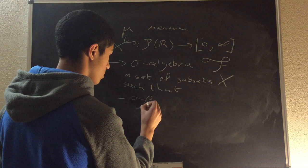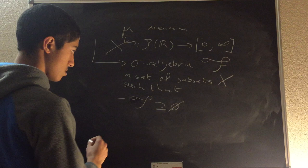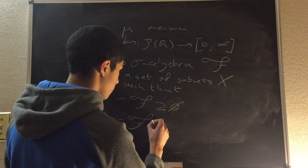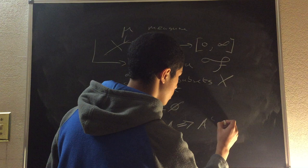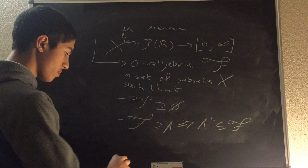The sigma-algebra F always contains the null set. Second, if sigma-algebra F contains a set A, then that implies that the complement of A is also contained within our sigma-algebra F.